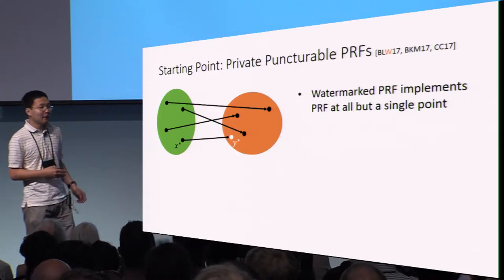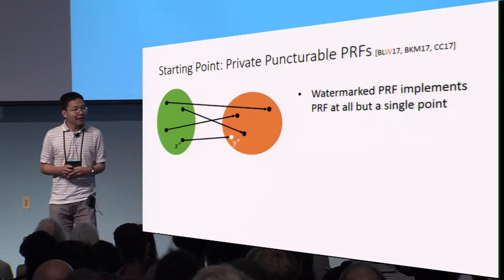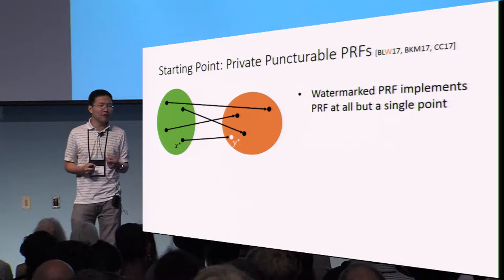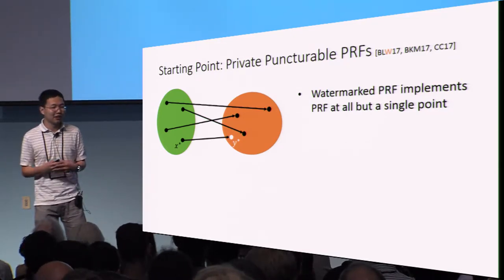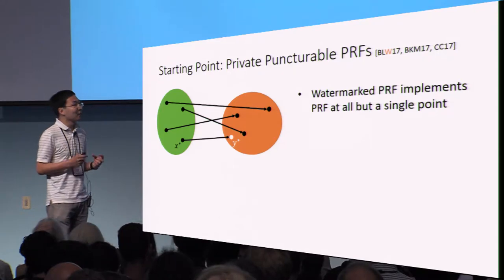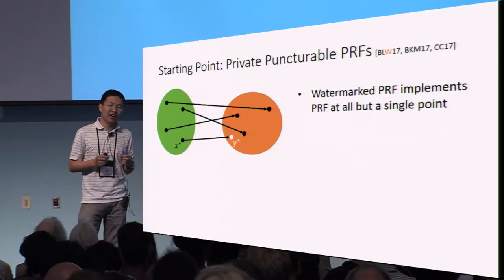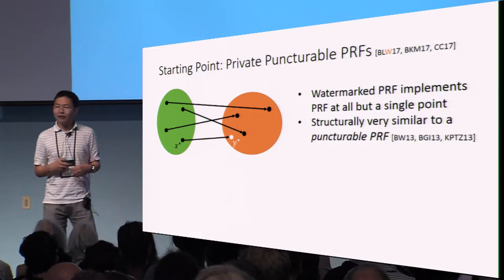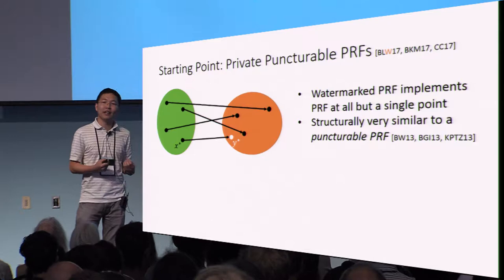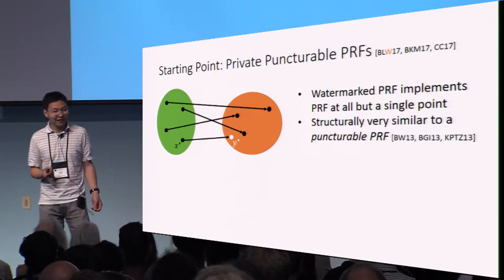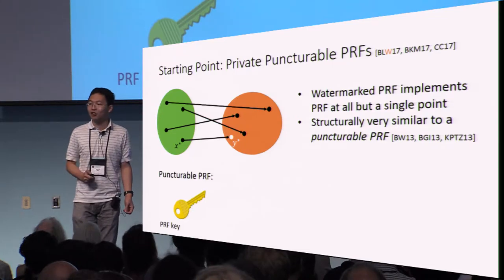I will now give you a high-level overview of how our construction works. The starting point of our construction is a primitive called private puncturable PRFs. Let me begin by reminding you what these various notions are. Recall that the watermark key in our construction implements the real pseudo-random function at all but a single point. If we look at this structurally, this should remind us of another cryptographic primitive: the notion of a puncturable PRF.